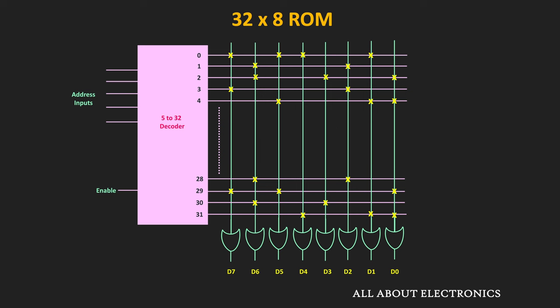Let us see how to read the data from the ROM based on this interconnection. Based on the address input, the fifth output of the decoder gets high. Once it gets high, wherever there is an interconnection, the output of the OR gate will also become high, because physically there is an interconnection between the output of the decoder and the OR gate. For the rest of the OR gates, the output will remain 0. In the decoder, depending on the address inputs, only one decoder output becomes high while the remaining outputs stay low.